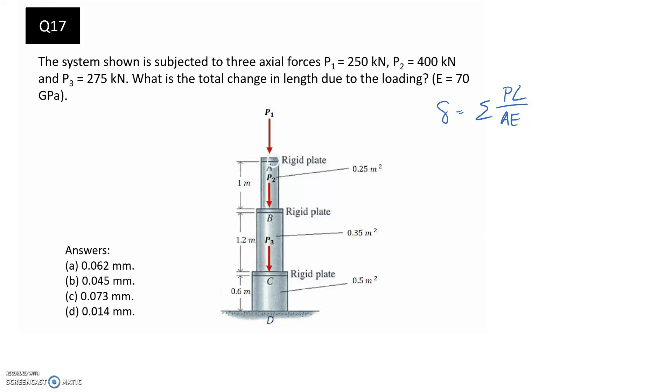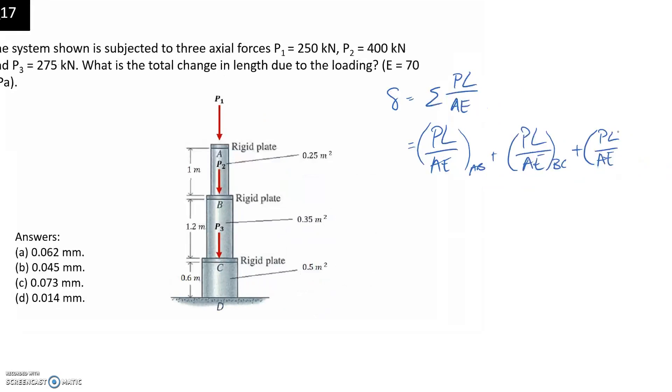We're going to have a section between A and B with constant force, a second section between B and C with constant force, and then between C and D with constant force as well. The total axial deformation is going to be PL on AE for section AB, then for section BC, and then for section CD.